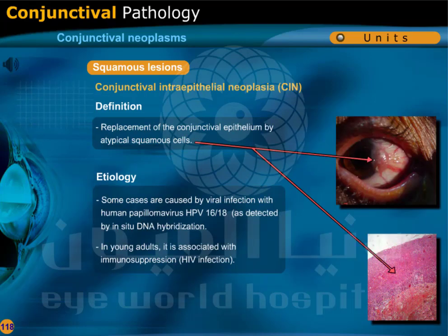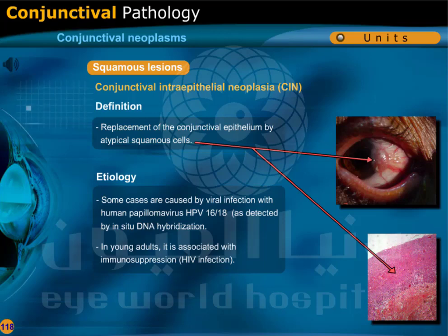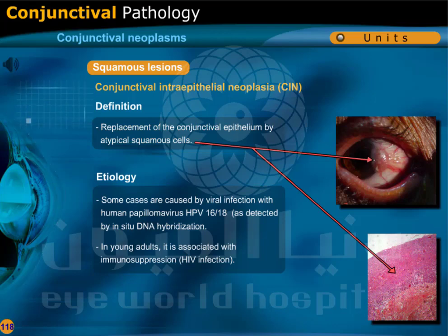Conjunctival intraepithelial neoplasia involves replacement of the conjunctival epithelium by atypical squamous cells. Some cases are caused by viral infection with human papilloma virus 16 or 18, as detected by in-situ DNA hybridization. In young adults, it is associated with immunosuppression, such as HIV infection.